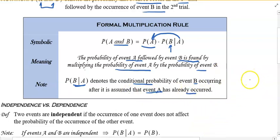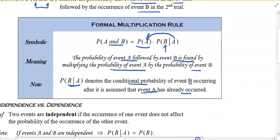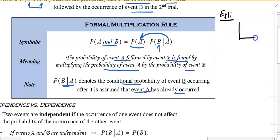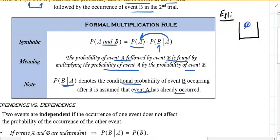Let me clarify how this works with an example I'm going to make. We have a jar, and within the jar we have five blue marbles and ten red, for a total of 15 marbles. We're going to pick two.